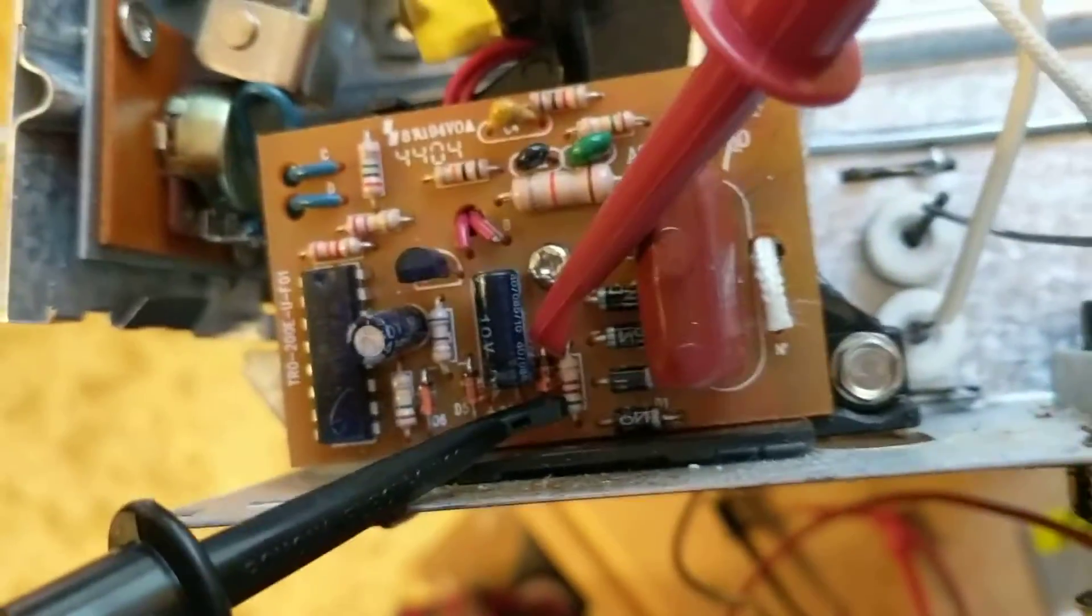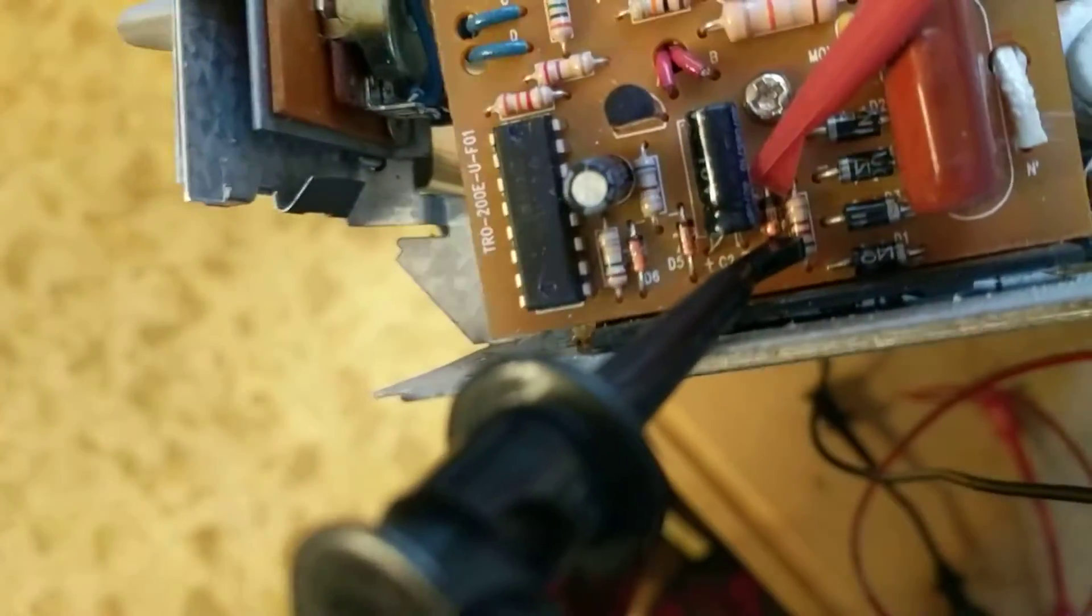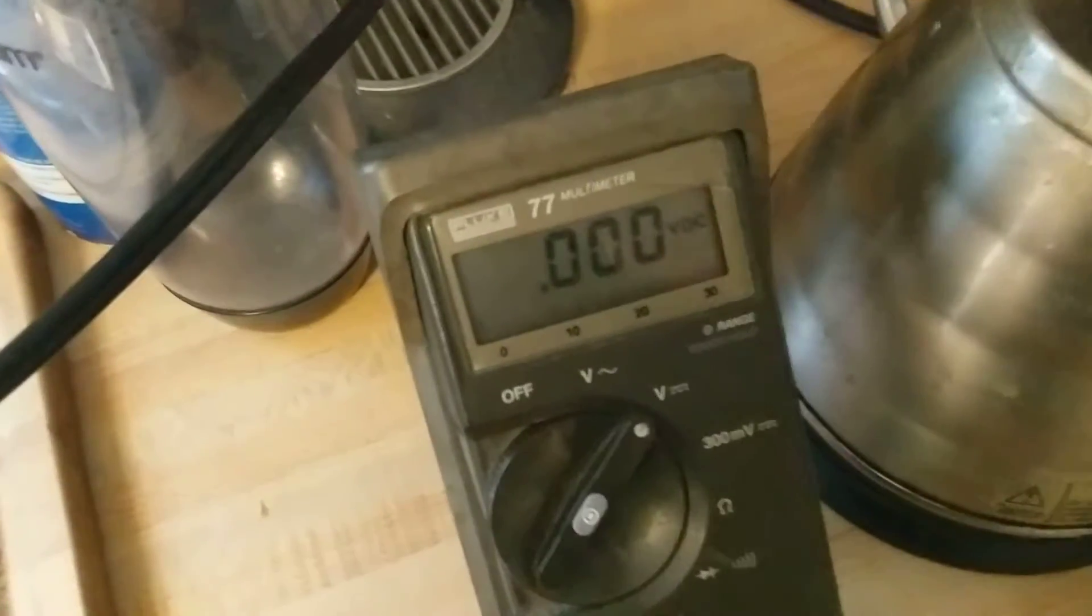All I've done is I've hooked my meter up across that exact same diode. That's the new diode now that I've soldered into that position. I took the board out and removed the diode. Now, I have it set up to read voltage.